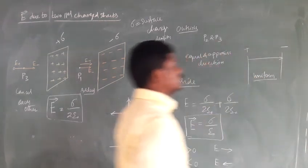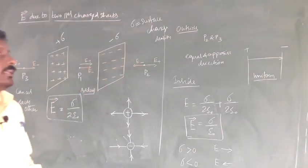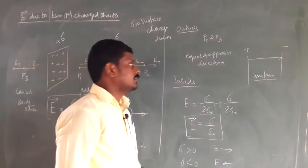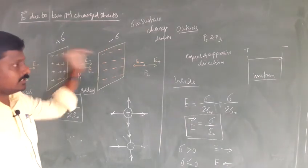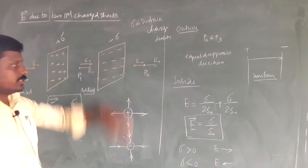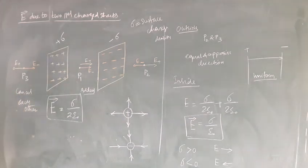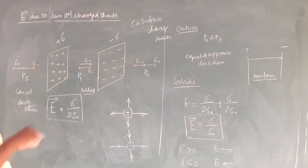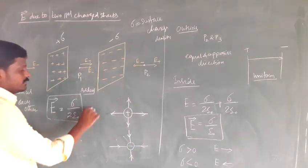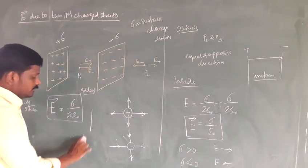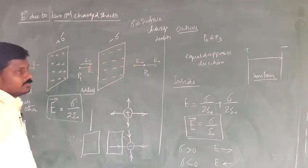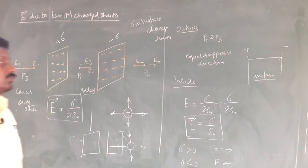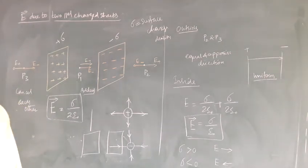Electric field lines are uniform between the plates. This charged plate setup gives a uniform electric field transfer. Today we have discussed infinite charge, infinite charged wire, one infinite sheet, and two parallel charged sheets. It will be worth 3.5 marks — just go through it. Okay students, thank you.